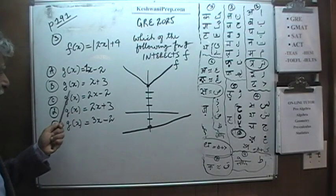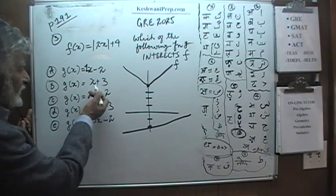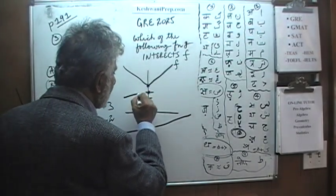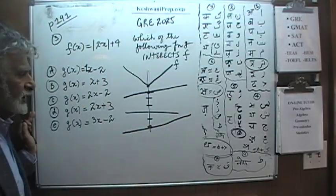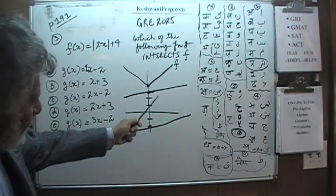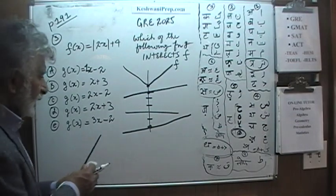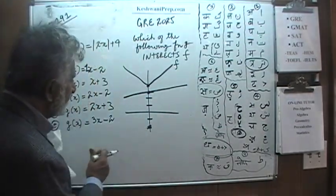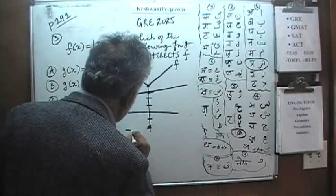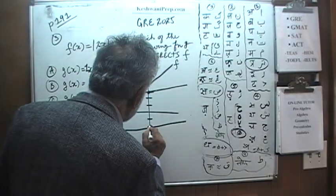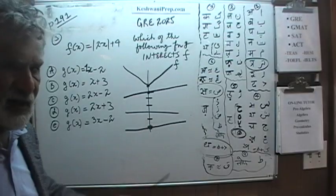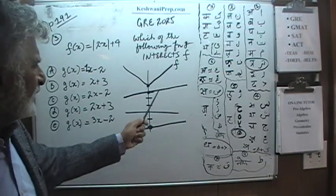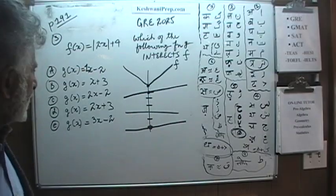The same thing is true for answer choice B. It starts at 3, but that doesn't matter — it's going to go farther and farther apart. Since both have a slope of 1, I should have drawn them as parallel. Of course they have to be parallel because they have the same slope. In the real exam you won't waste time on that — you just need to understand they are parallel and will never intersect.